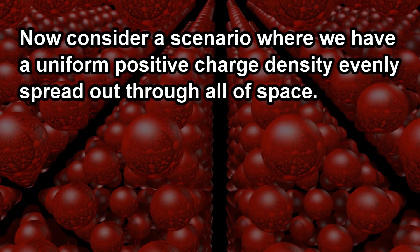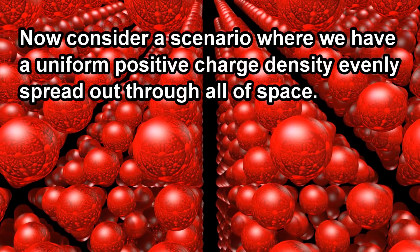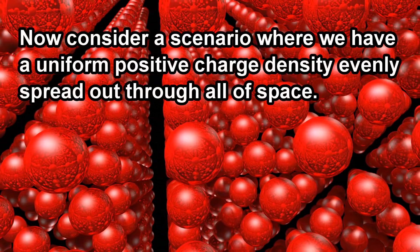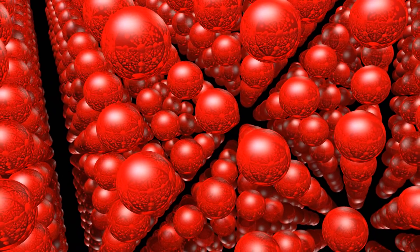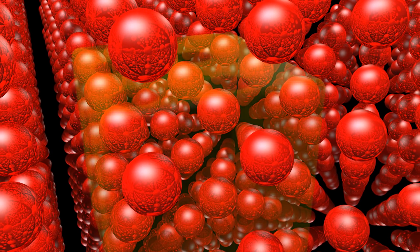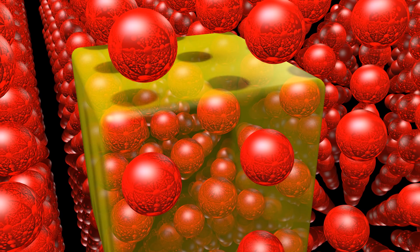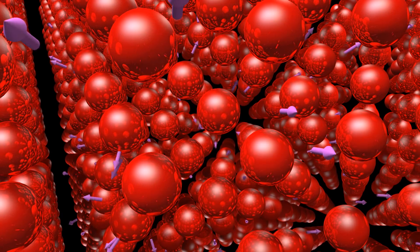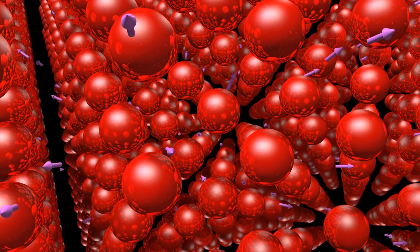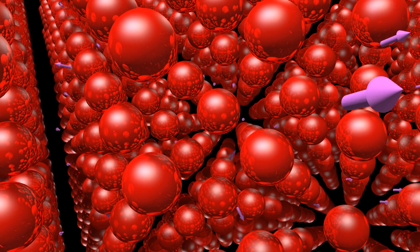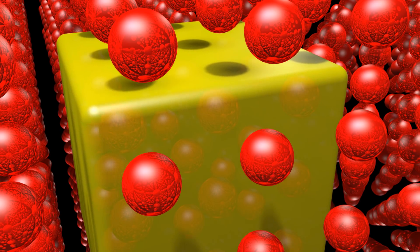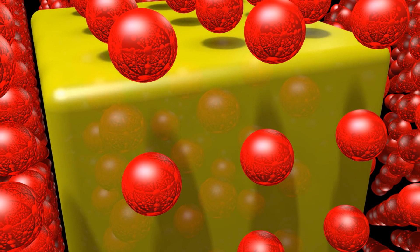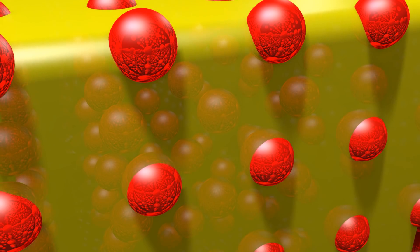Now consider a scenario where we have a uniform positive charge density evenly spread out through all of space. Every closed surface throughout this space has a net positive charge inside. Therefore, every closed surface must have a net amount of electric flux exiting. But this leads to a number of logical contradictions. As the volume of our closed surface grows larger, the amount of positive charge inside also grows larger.